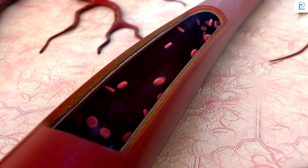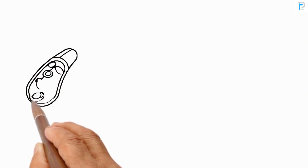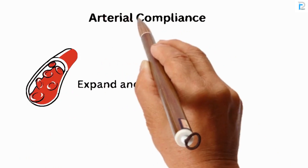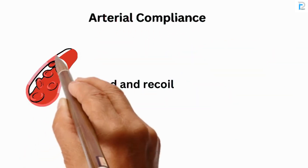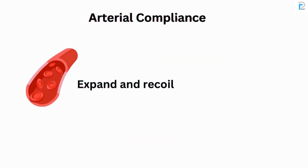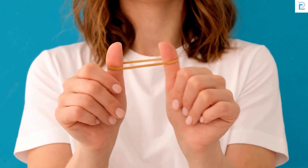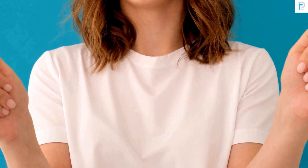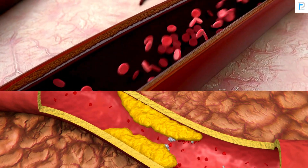First, what is arterial compliance? Arterial compliance refers to the ability of the arteries to expand and recoil as blood is pumped into them. When the arteries have more blood, they expand; when they have less blood, they recoil or contract. This is similar to a rubber band, which can easily stretch, expand, and recoil.